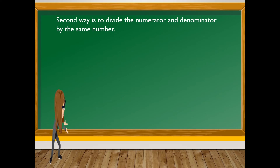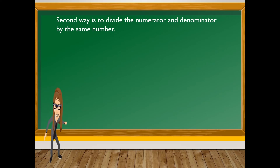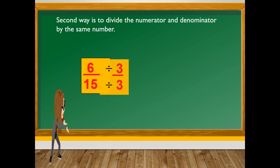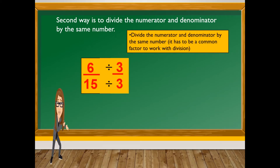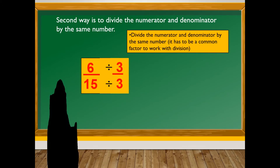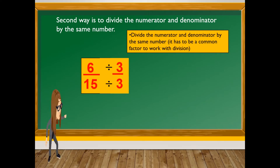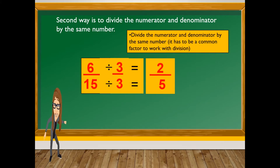The second way is to divide the numerator and denominator by the same number. For example, six over fifteen — it can be divided by three. Divide the numerator and denominator by the same number; it has to be a common factor. Six divided by three is two, and fifteen divided by three is five.